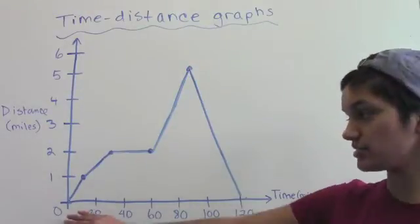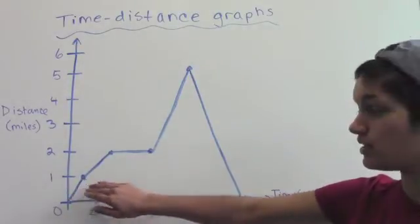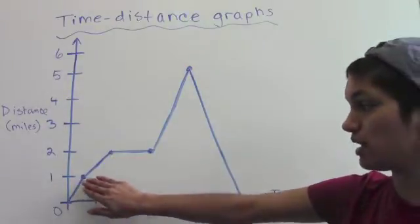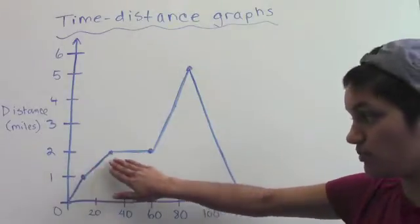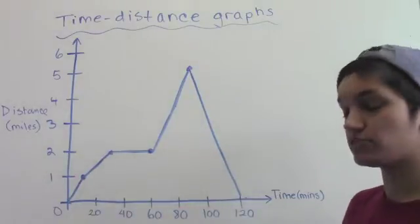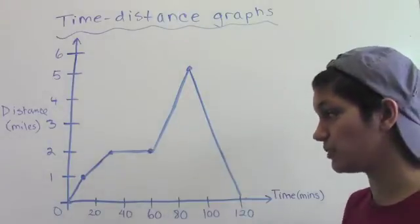When the cyclist starts out, they are going at a steady pace. The first change comes at this point. Then, the slope decreases. They cover the same amount of distance, one mile, but in twice as much time, 20 minutes. For some reason, there is an obstacle in their trip that is making them go slower.